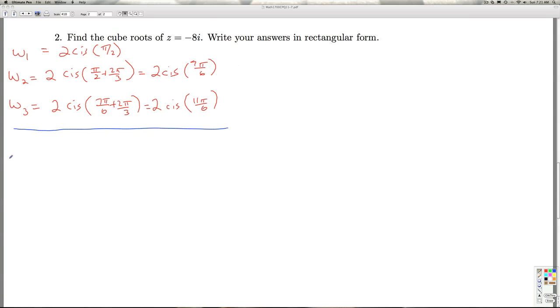All right, let's convert these to rectangular form and then we'll be done. 2 cis pi over 2 is 2 times cosine pi over 2 plus i sine pi over 2, which is 2 times, the cosine of pi over 2 is 0, the sine of pi over 2 is 1, so I just get 2i.